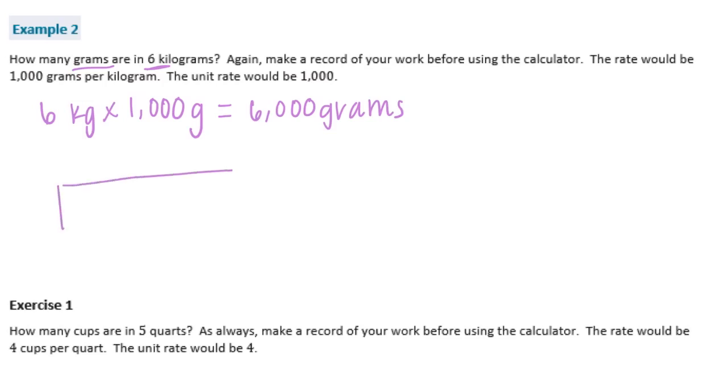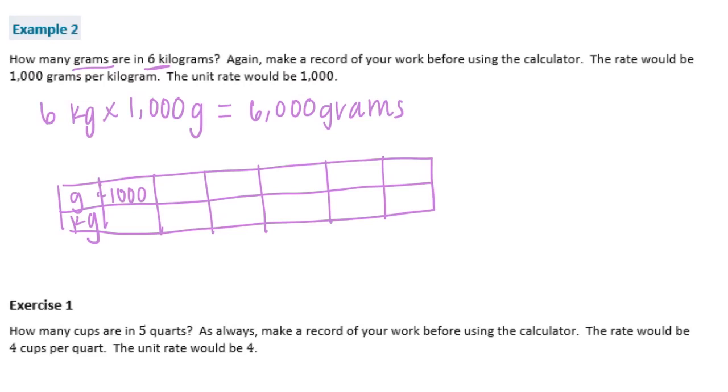And if we wanted to make a chart... Let's see. Let's do grams and kilograms. So 1,000 grams is 1 kilogram. 2,000 grams is 2 kilograms. 3,000 is 3. 4,000 is 4. 5,005. And then 6,000 is 6. Which is what we found right there.